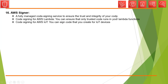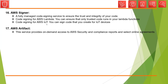The next service is AWS Signer. It's a code signing service to ensure the trust and integrity of your code. You can use it in combination with AWS Lambda or various AWS IoT services. AWS Artifact is a compliance service — it's a central location where you can get all your compliance reports and select online agreements.